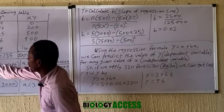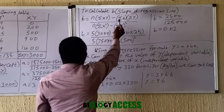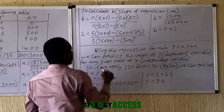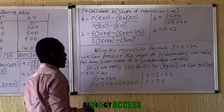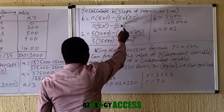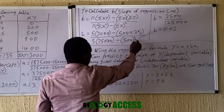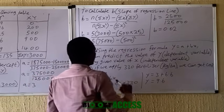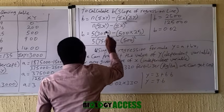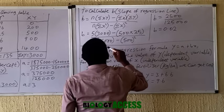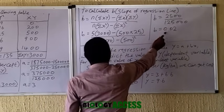Sum of X is 500, and you square it inside the bracket — so (sum of X)² = 500² = 250,000. Carrying out the multiplications in the numerator and denominator, then performing the subtraction, and finally dividing, you get B = 0.02.